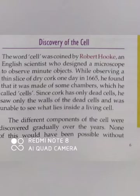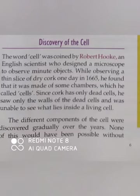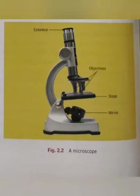Robert Hooke was not able to see what lies inside a living cell. But after many years, many scientists began to discover newer types of microscopes through which they were able to see what is present inside a living cell. Students, this is a picture of a microscope we use today. Now let's discuss the parts of a microscope.